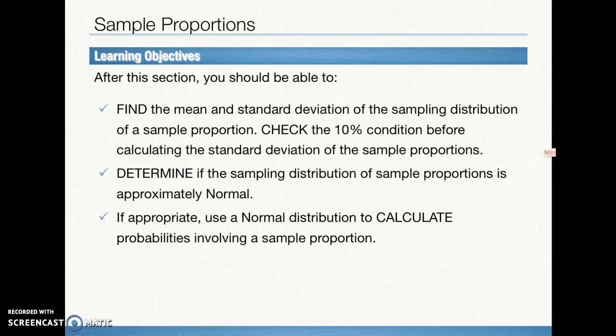Our learning objectives for this section are to find the mean and standard deviation of the sampling distribution of a sample proportion. We can only use the formula for the standard deviation if we check the 10% condition — where the sample size can be no larger than 10% of the population size. We also want to determine the shape of the sampling distribution, checking the normal or large counts condition to see if the shape is approximately normal, and if it is, we'll use normal procedures to calculate probabilities.